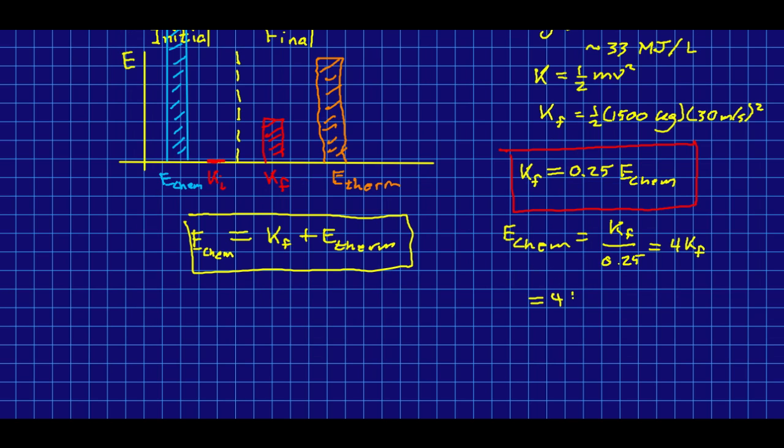So, if you plug those numbers into your calculator, your calculator is going to tell you that that is about 2.7 times 10 to the 6. And, that's kilogram meter squared per second squared. That is joules. Which is a pretty big amount of energy, right? That's 2.7 megajoules.